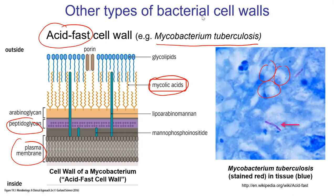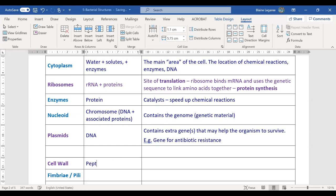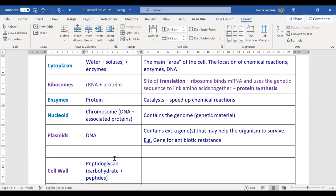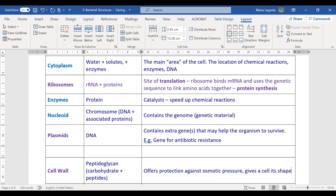Let's write a note about the cell wall. The cell wall is mostly made of peptidoglycan — that's carbohydrates plus peptides, which are small amino acid sequences. What is the cell wall doing? It offers protection against osmotic pressure and gives the cell its shape. Those are the main things a cell wall does, and it obviously helps the cell interact with its environment.